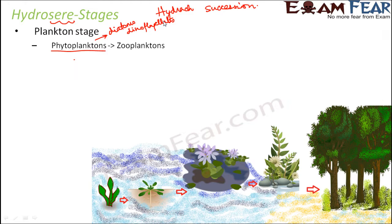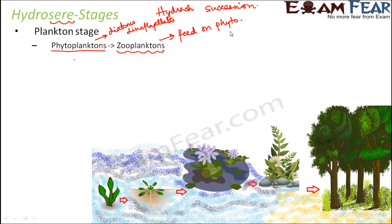This rapid multiplication later gives rise to zooplanktons. Zooplanktons are not autotrophic — they feed on the phytoplanktons. So the first stage is called the plankton stage because it includes both phytoplanktons and zooplanktons. When these planktons die, the lower layer of soil is enriched with organic matter, which becomes favorable for the growth of the next stage.